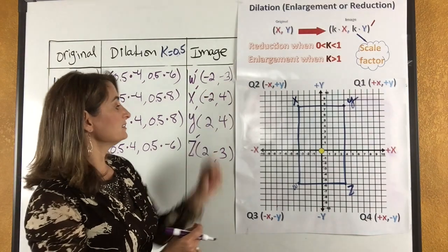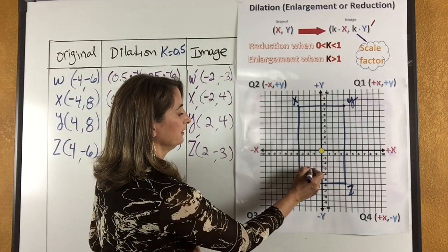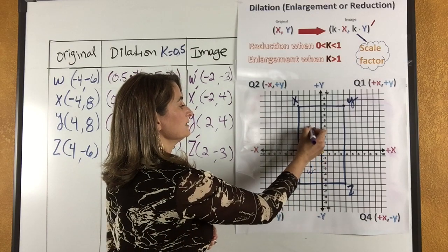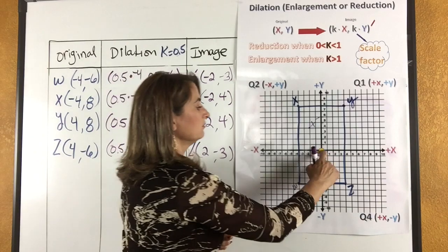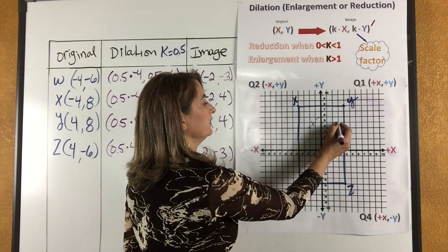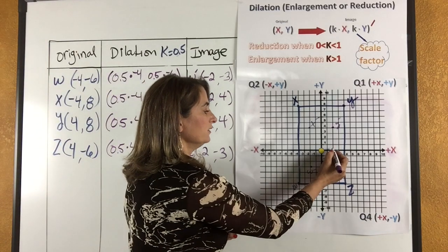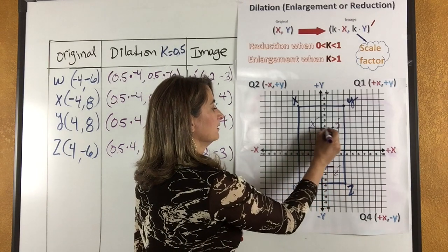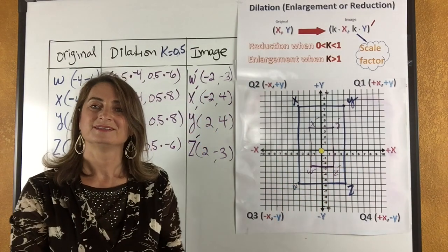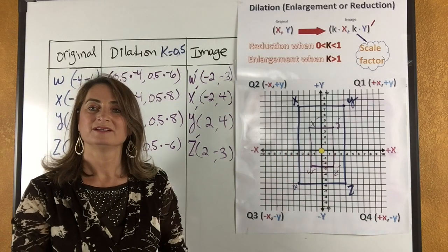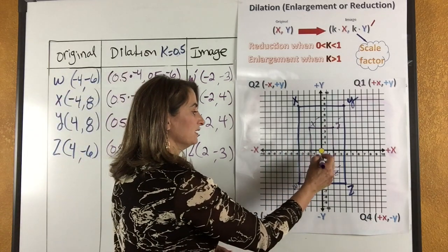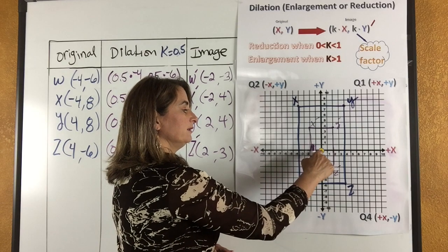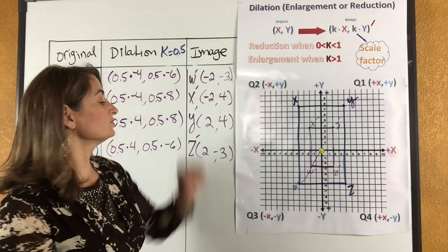Now let's plot the points. W prime is (−2, −3) — go to negative 2, down to negative 3. X prime is (−2, 4) — negative 2, up to 4. Y prime is (2, 4) — go to 2, up to 4. Z prime is (2, −3) — go to 2, down to negative 3. The new image is half of the original; each side is half of the original. Also, from the center of dilation, the distance to the image follows the scale factor — the original distance cut in half gives the distance to the image, and every vertex connects with the center of dilation, which is the origin.